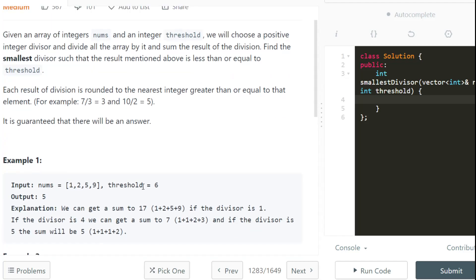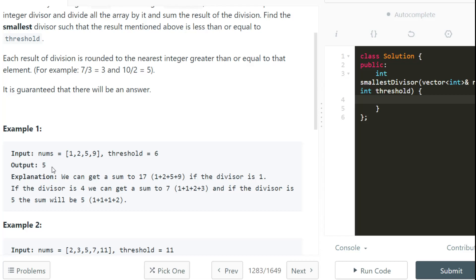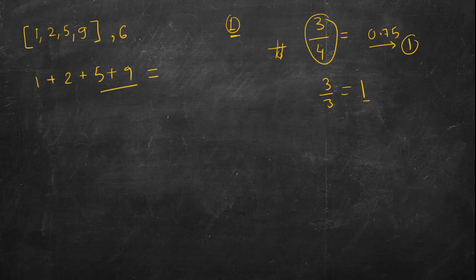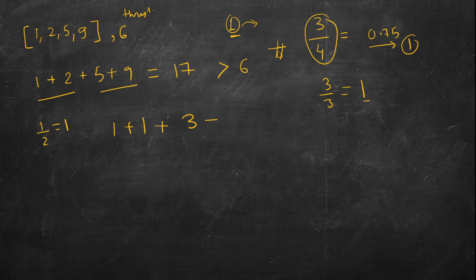The sum should be less than or equal to the threshold, and it's guaranteed there will be an answer. For example, with array [1, 2, 5, 9] and threshold 6, the output is 5. The smallest divisor can be 1. Dividing by 1: 1+2+5+9=17, which is more than 6. Trying divisor 2: ceiling(1/2)+ceiling(2/2)+ceiling(5/2)+ceiling(9/2) = 1+1+3+5 = 10, still more than 6.